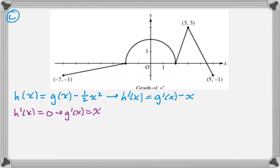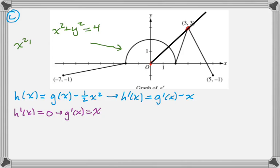For h prime to be 0, we need g prime of x to equal x. So we're going to look at that graphically — we add the line y = x to our graph, and you can see there are actually two places where they intersect. To find the first one, you might just know it's √2, but if not, we write the equation of the circle, set y = x, so x² = 2, giving x = √2.